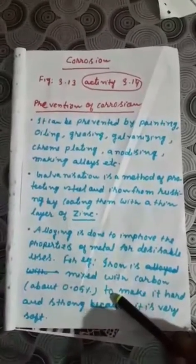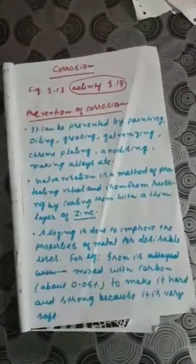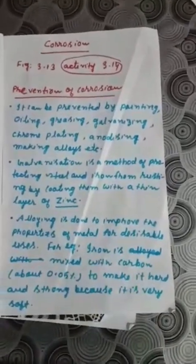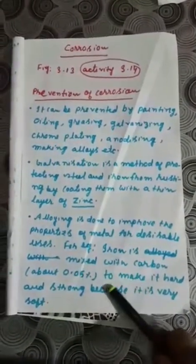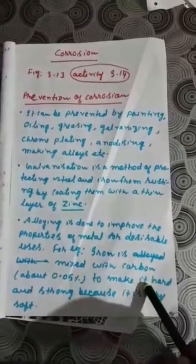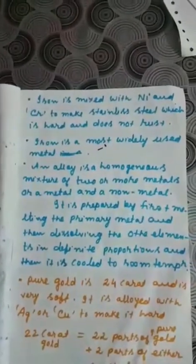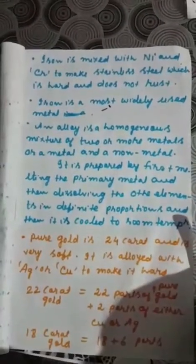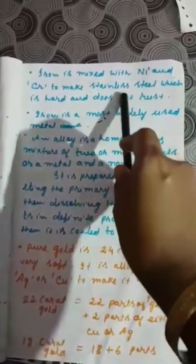An alloy is a homogeneous mixture of metals with metals, or a metal with a non-metal. Alloying is done to improve the properties of a metal for desirable uses. For example, iron is mixed with about 0.5% carbon to make it hard, because pure iron is soft. Iron is also mixed with nickel and chromium to make stainless steel. You need to remember the names of alloys and their components for the exam.